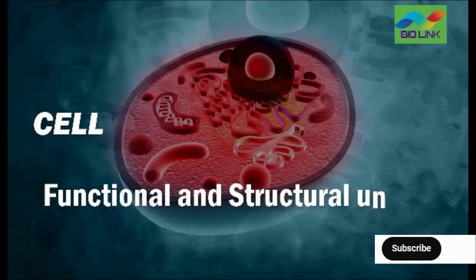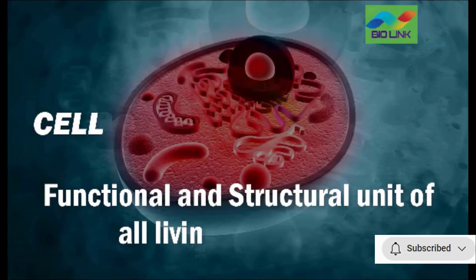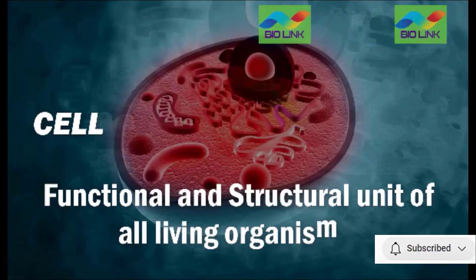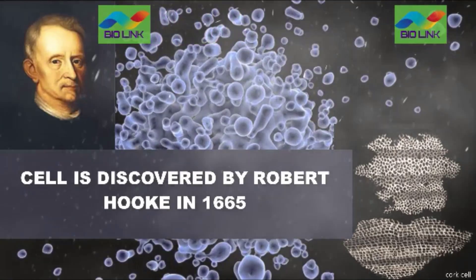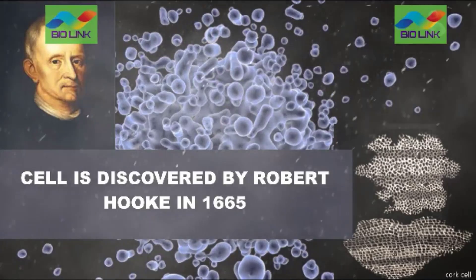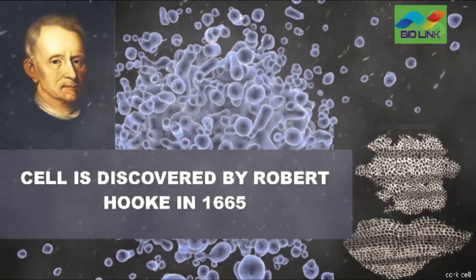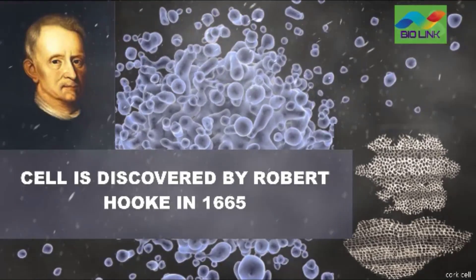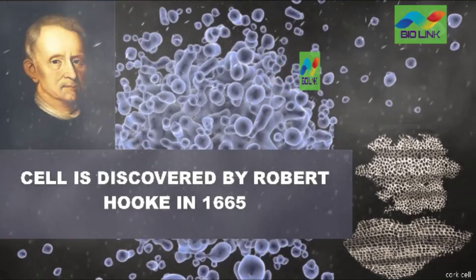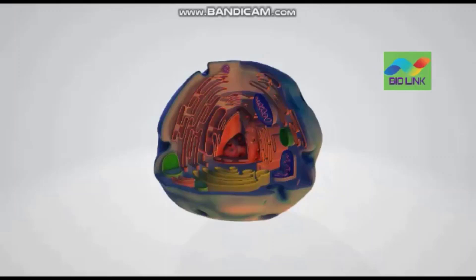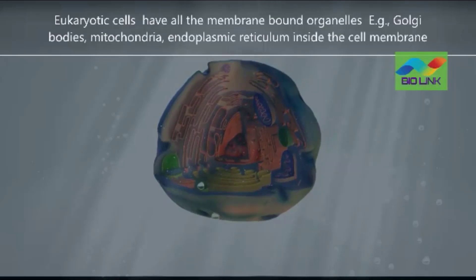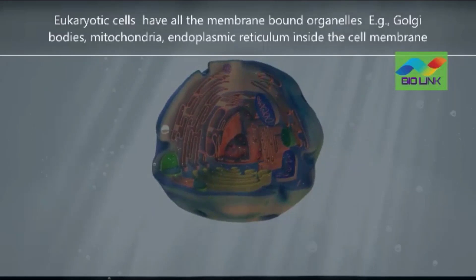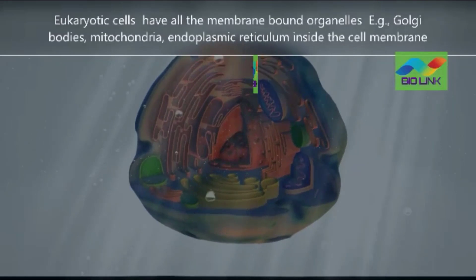Cell is the smallest unit that can live on its own and that makes up all living organisms and the tissues of the body. Cell was discovered by Robert Hooke in 1665. He discovered the cell when he examined a cork slice under the microscope.